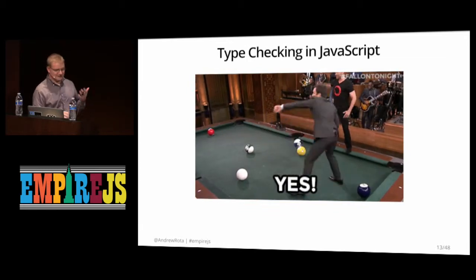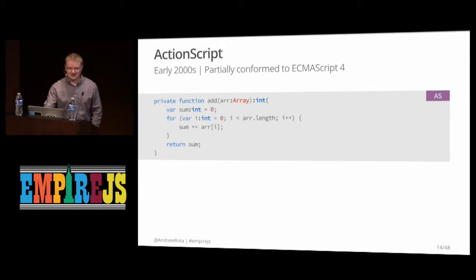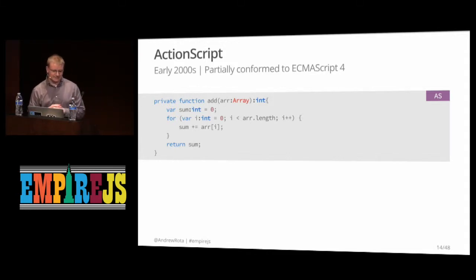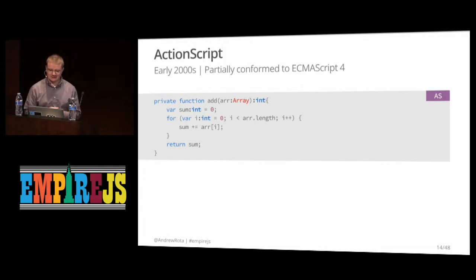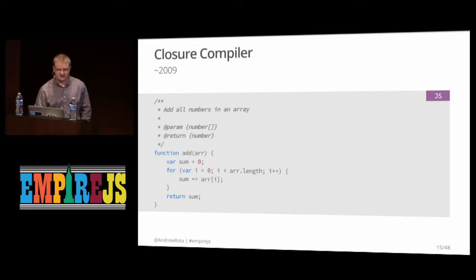We have type checking in JavaScript and it's exciting. We've actually had this for a long time — how many of you wrote ActionScript back in the day? ActionScript, being a dialect of JavaScript, actually had static types built into it. ECMAScript 4 had types as part of the spec, but it never really got off the ground in JavaScript. ActionScript did conform partially to it, so we ended up with some ability to do static typing when writing ActionScript.